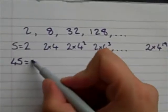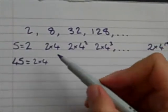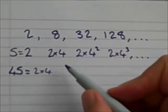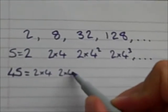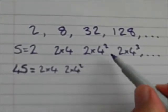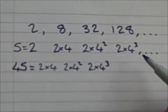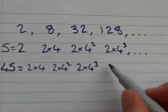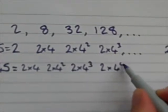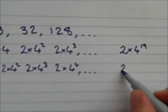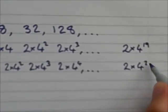So 4 times 2 will be my first term and then here I had 2 times 4, I've multiplied that by 4 so I'll end up with 2 times 4 squared. When I multiply this by 4 I get 2 times 4 cubed. When I multiply this by 4 I get 2 times 4 to the power 4 and so on until my last term which will be 2 times 4 to the power 20.